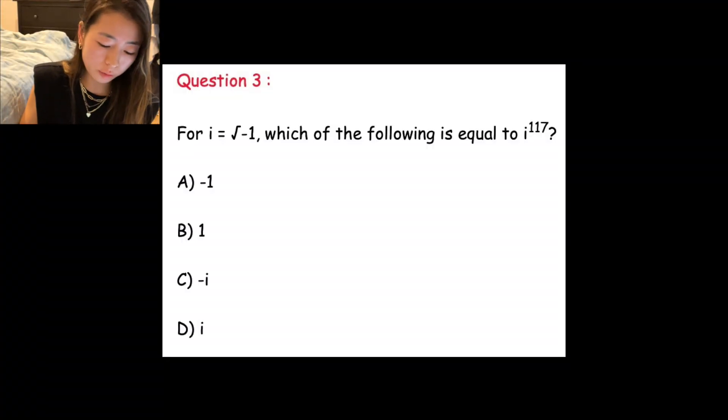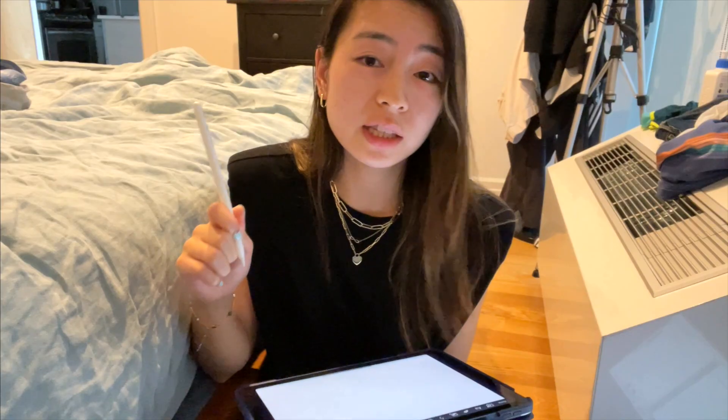The hardest problem of them all because oh my gosh, we have to get i to the 117th power for i equals square root of negative one, which of the following is equal to i to the 117th power. Man, how do we get this?